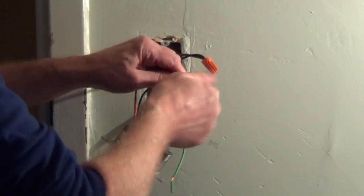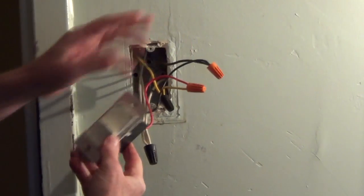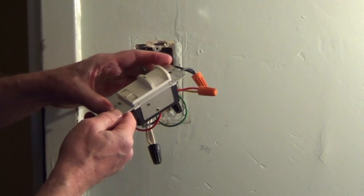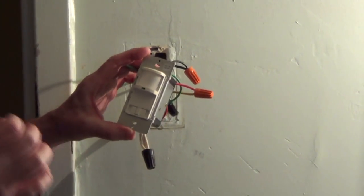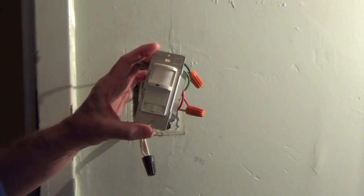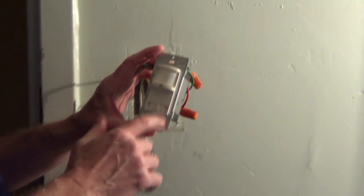And the only other thing that you want to know with a motion detector like this is how many watts it's rated for and this one is rated for 500 watts and you need to make sure that what you're drawing, so in this case we've got two 34 watt fluorescent bulbs and one 60 watt bulb.